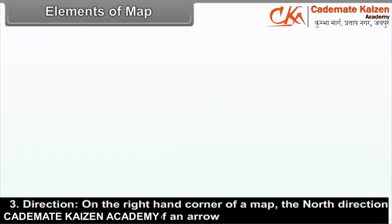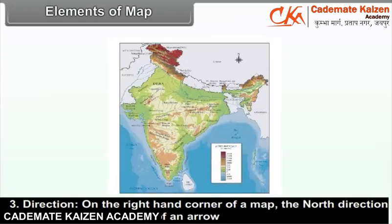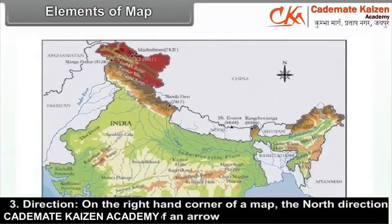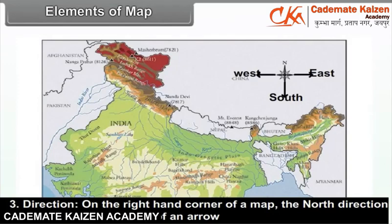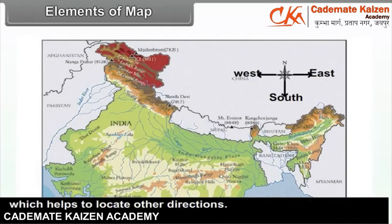Direction: On the right-hand corner of a map, the north direction is indicated with the help of an arrow, which helps to locate other directions.